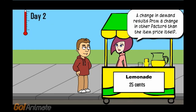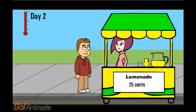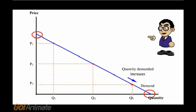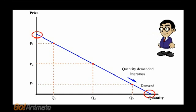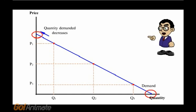A change in demand results from change in other factors than the item price itself. Let's go over what Dr. Fung's lecture says. When more is bought at lower prices, we say the quantity demanded has increased. When less is bought at higher prices, we say that the quantity demanded has decreased.